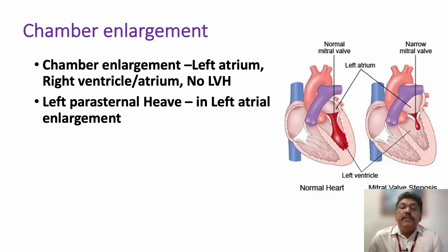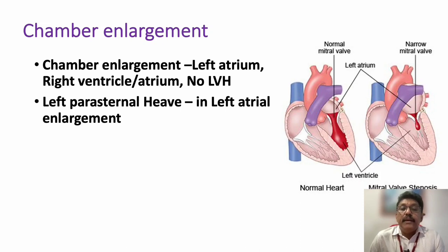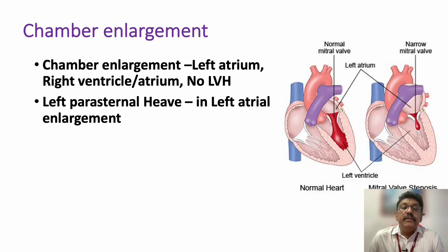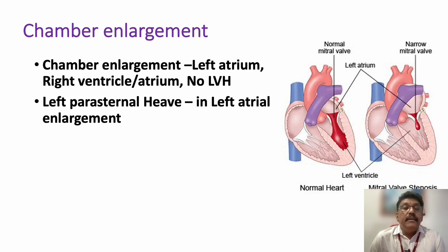In mitral stenosis, the only chamber involved early is the left atrium. Left atrial enlargement occurs first, and later pulmonary hypertension leads to right atrial and right ventricular enlargement — that is a late stage. In early stages, the only enlarged chamber is the left atrium, which clinically produces a left atrial parasternal heave.